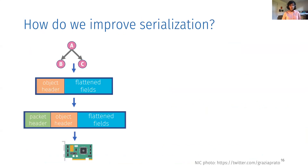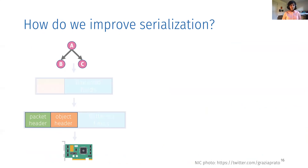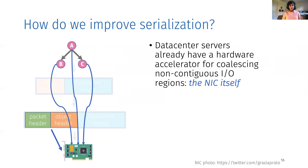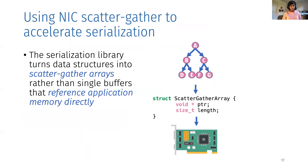So how do we improve serialization? The core problem is that application memory can be scattered all over the place, and the data movement required to get this memory in a contiguous fashion in pages that the NIC can work with takes a lot of work. If we could somehow get rid of this data movement, serialization would be more efficient. Fortunately, we have a hardware accelerator capable of coalescing non-contiguous IO regions: the NIC itself. The NIC has a scatter-gather engine that allows us to give it pointers to the packet header, object header, and each of the serialization fields, which it will coalesce into a single packet before transmission. We refer to this approach as scatter-gather based serialization. The serialization library turns data structures into scatter-gather arrays, which are lists of pointers and lengths that reference application memory directly.